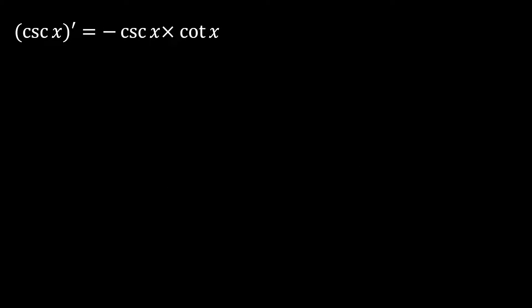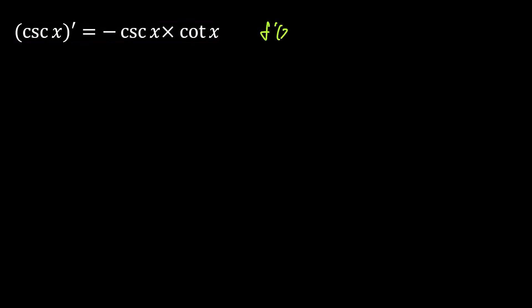Here we have the result we need to prove. And first, let's write down the formula for the limit definition of derivative. f prime is the limit as h approaches 0 of f of x plus h minus f of x over h.